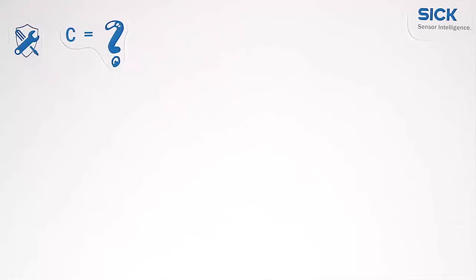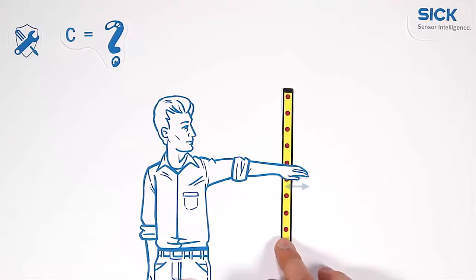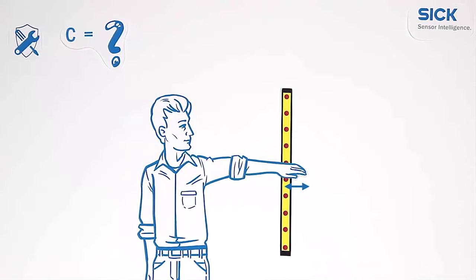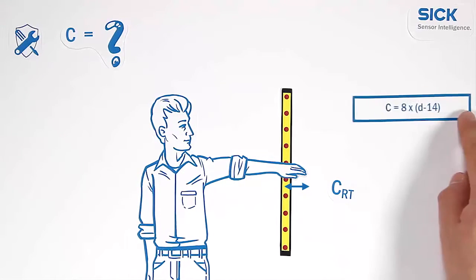What does c actually mean? Let's take a look at this light curtain. Decisive is how far can the operator reach into the hazardous area without being detected. This depends on the selected resolution D as shown in the formula.